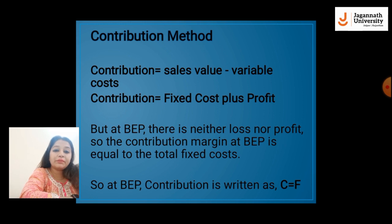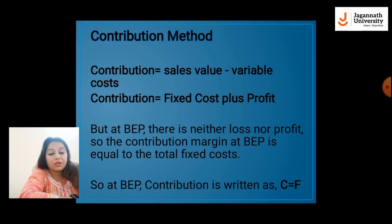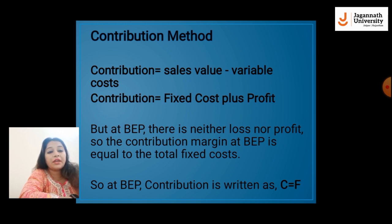First is the contribution method. How do we calculate contribution? Contribution is equal to sale value minus variable cost. Contribution is also equal to fixed cost plus profit. These are two formulas to calculate contribution. But at break-even point there is neither loss nor profit, so the contribution margin at break-even point is equal to fixed cost. At BEP, contribution C is equal to fixed cost F.